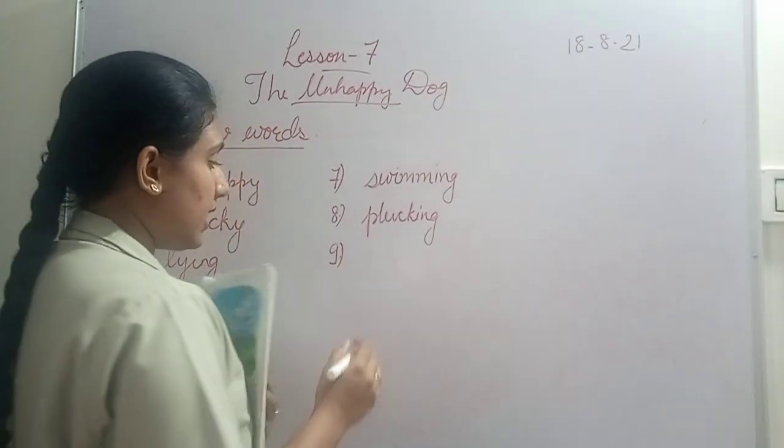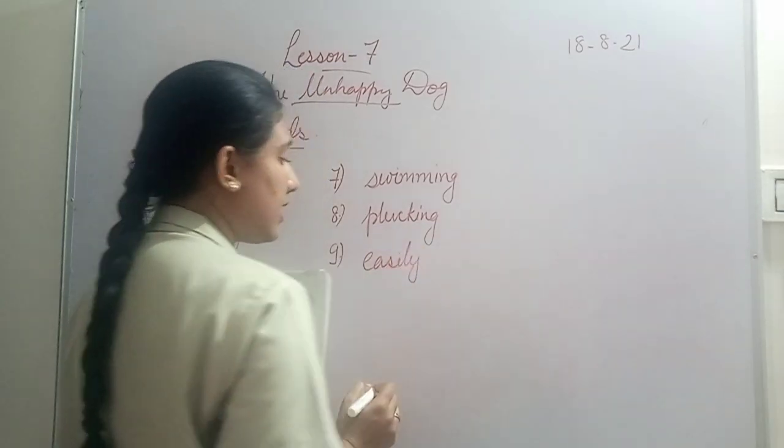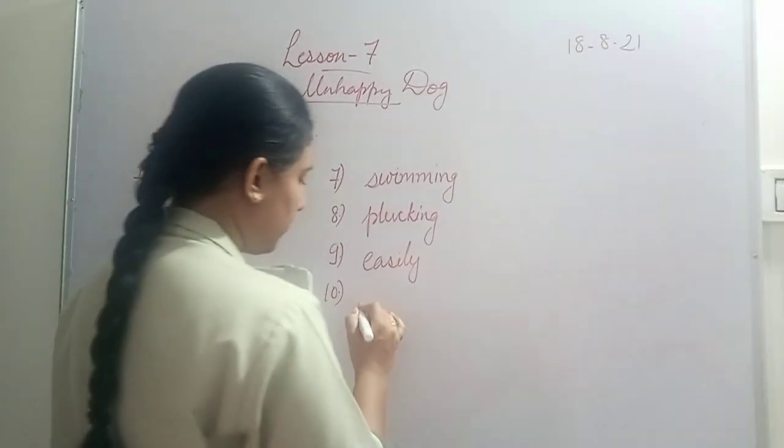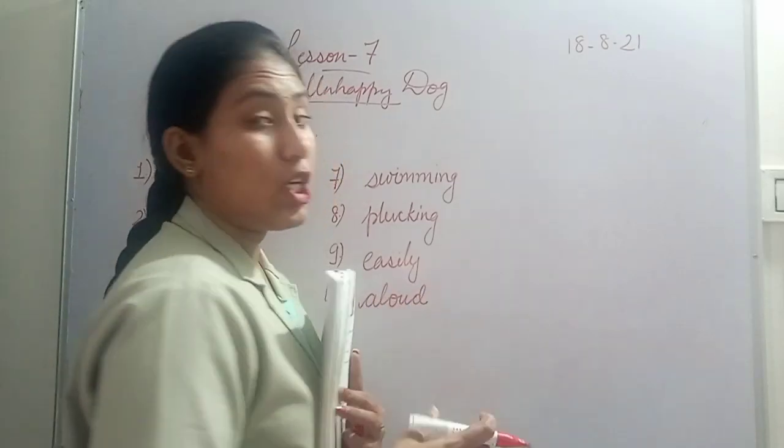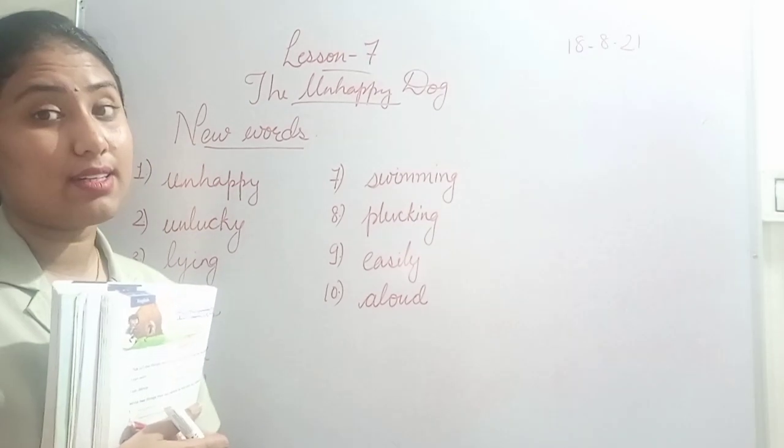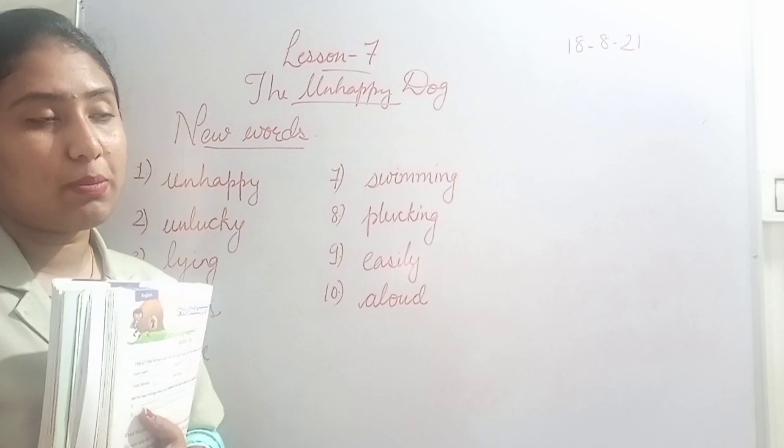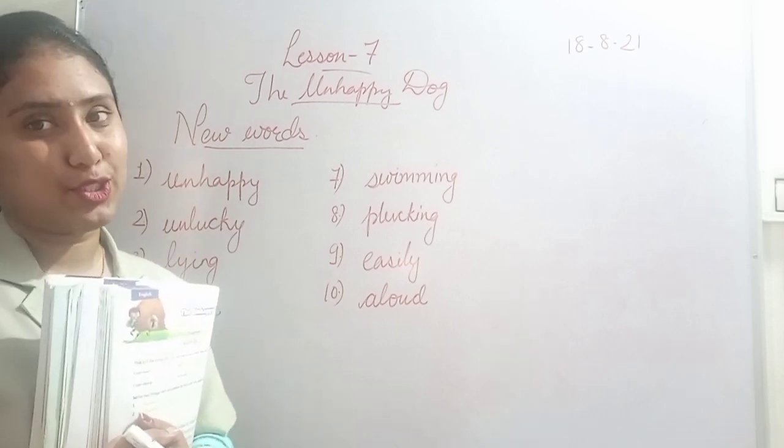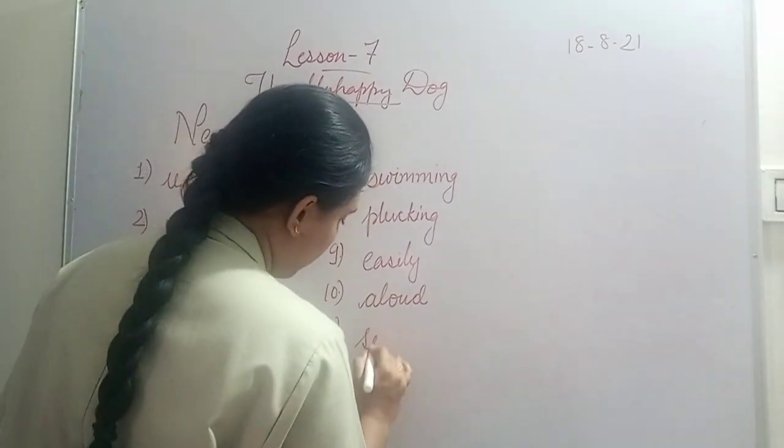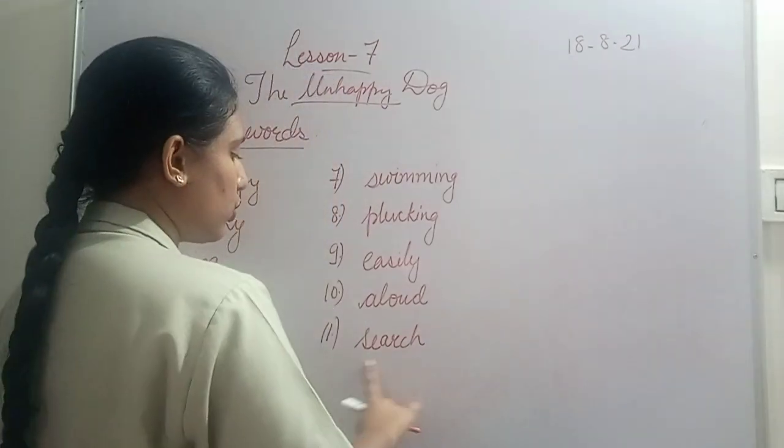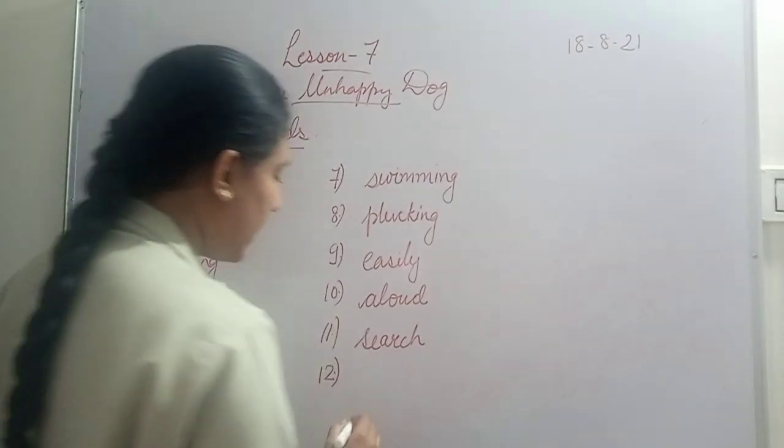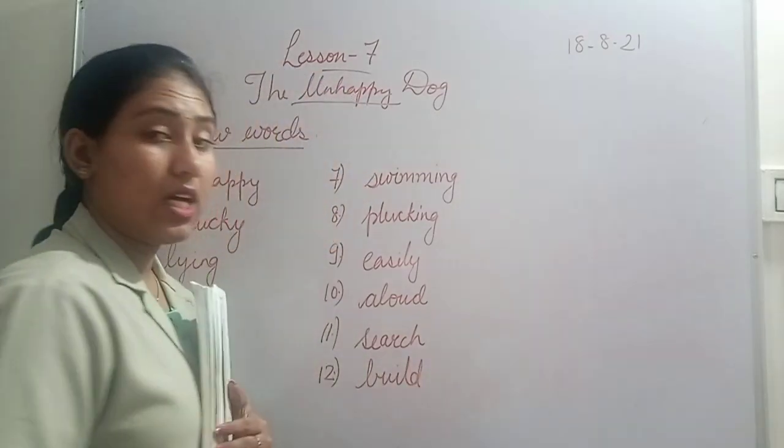Ninth word is 'easily,' E-A-S-I-L-Y. Easily means with ease. Tenth word is 'aloud,' A-L-O-U-D. Aloud means loudly, as loud as she could speak. She said aloud that Snoopy is so lucky, he can play all day but I cannot play. Eleventh word is 'search,' which means to look for something.